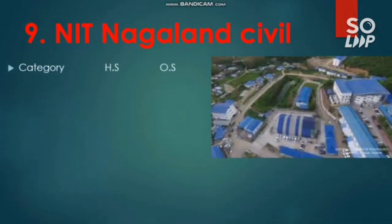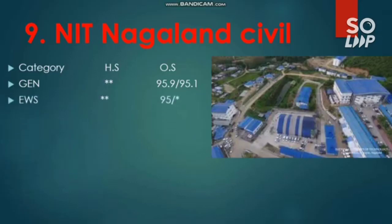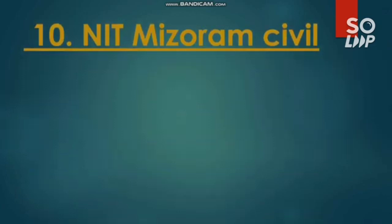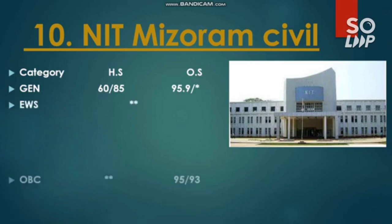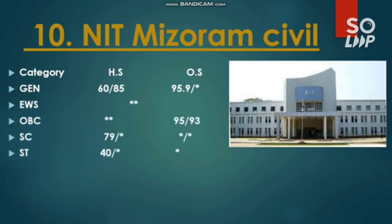NIT Nagaland: Civil Engineering has the lowest cutoff. For General: 95.9 and 95.1 percentile. EWS requires 95. OBC requires 95. SC requires 80 percentile. ST has no seat reserved. The last NIT: General requires 95.9, EWS has no seat reserved, OBC requires 95 and 93 percentile, SC has no seat reserved, and ST has no seat reserved.